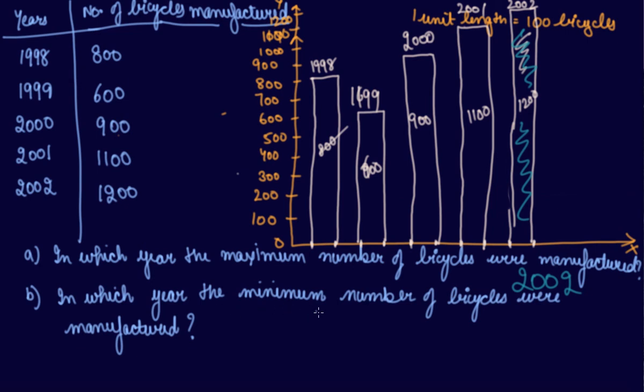In which year the minimum number of bicycles were produced? Can you see the least bar graph? Which one is the least bar graph? This one. So you can say which is the year in this? 1999. So 1999 is the year in which the minimum number of bicycles were manufactured.